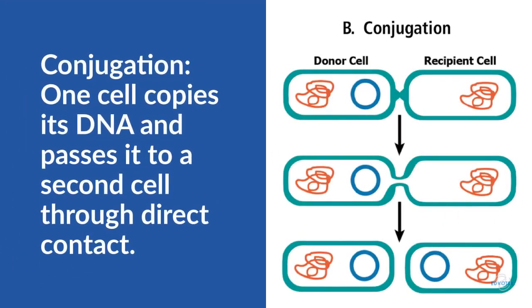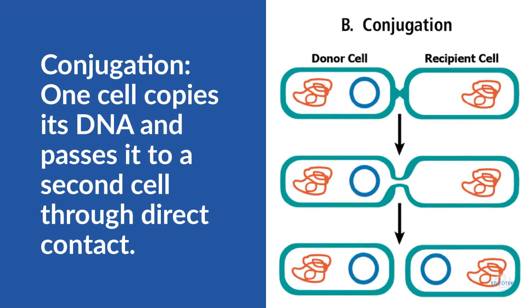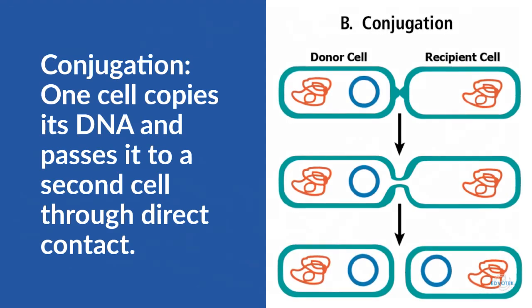In contrast, conjugation relies upon direct contact between two bacterial cells. A piece of DNA is copied in one cell, the donor, and then is transferred into the other cell, the recipient, through a bridge-like connection.